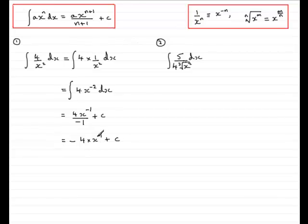What is x to the minus 1? Well, we can come back to this rule. X to the minus 1, if n here is a 1, becomes 1 over x to the power 1, or just simply 1 over x. So I can write this as minus 4 multiplied by 1 over x, and then plus c.